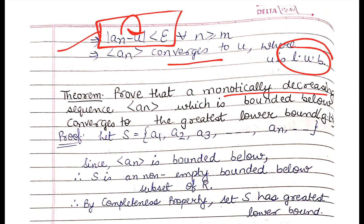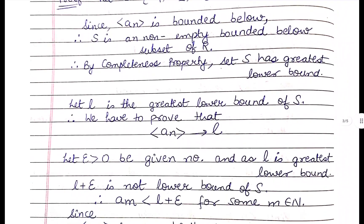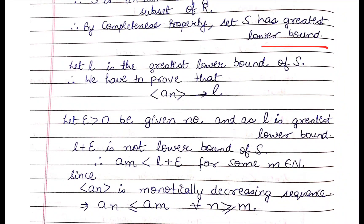Similarly, for a monotonically decreasing sequence that is bounded below, it means it will have a greatest lower bound — the infimum. The infimum is the greatest number that is a lower bound of the set, meaning all elements of the set are greater than or equal to the infimum.